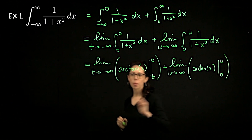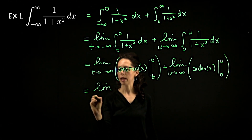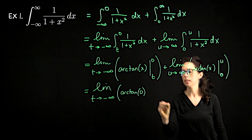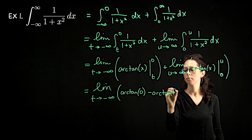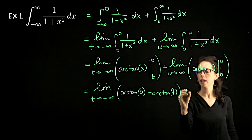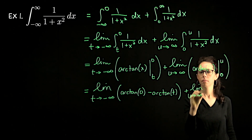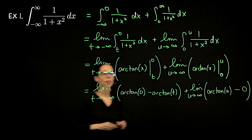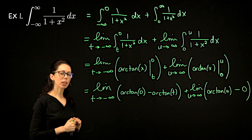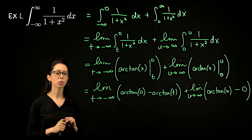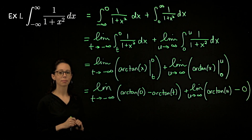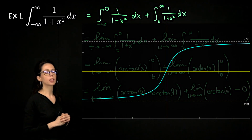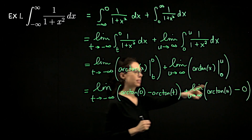Now we just need to plug in and remember how arctan works. This is the limit as t goes to negative infinity of arctan of zero, which is zero — arctan goes through the origin — minus arctan of t. Then plus the limit as u goes to infinity of arctan of u minus zero, because arctan of zero is zero. The graph of y equals arctan of x is an increasing function trapped between two horizontal asymptotes at negative pi over two and pi over two, so each of these limits exists and is a finite number.